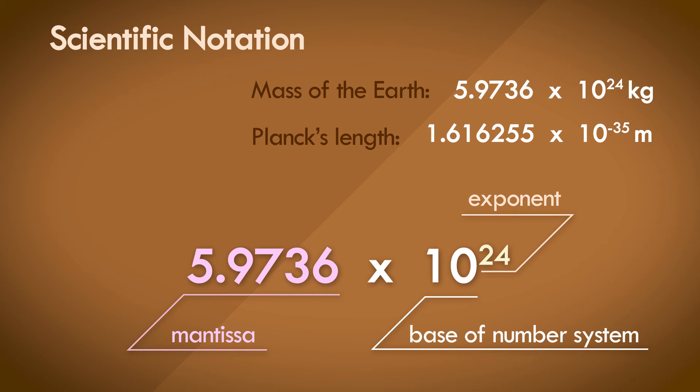Here, the mantissa would represent the accuracy of the number. The lengthier it is, the more accurate the entire number is. And the exponent signifies the scale of the number. A positive exponent signifies a number bigger than 1, and a negative exponent would represent a number between 0 and 1.